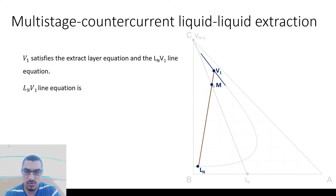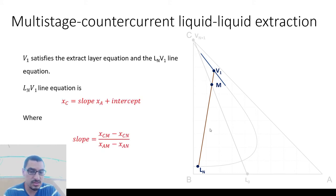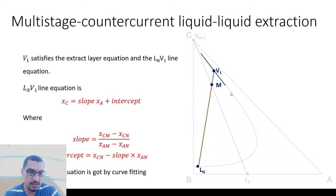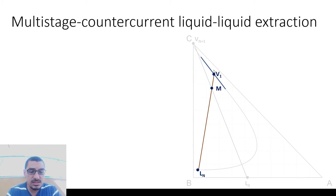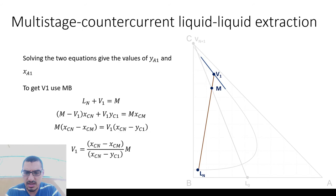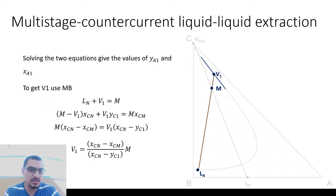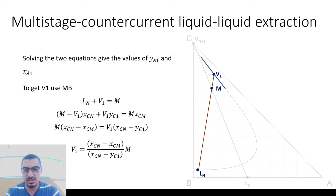To find V1, we are simply solving equations. I know two points — M and LN — so from these two points I can get the slope and intercept of a straight line, which is straightforward. Then I solve that line equation together with the extract line equation, and the intersection of these two lines gives point V1. After getting the coordinates of V1, I can get the flow rate V1 from a simple material balance. The process requires more steps than doing it by hand, but the advantage is that if you change any inputs, everything updates automatically.